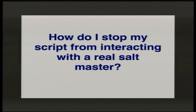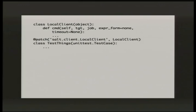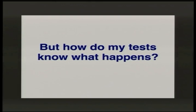Inside my test case I can interact with that object to run it. Now — how do I stop it talking to a real Salt master? The solution these days is mock.patch. mock is available in PyPI; if you're not running Python 3.3 or newer it's been included in Python 3.3. mock.patch lets me replace the salt.client.LocalClient — part of the API I'm using to talk to Salt — and replace it with something else I've created. The local client object has a cmd method that my script calls repeatedly.